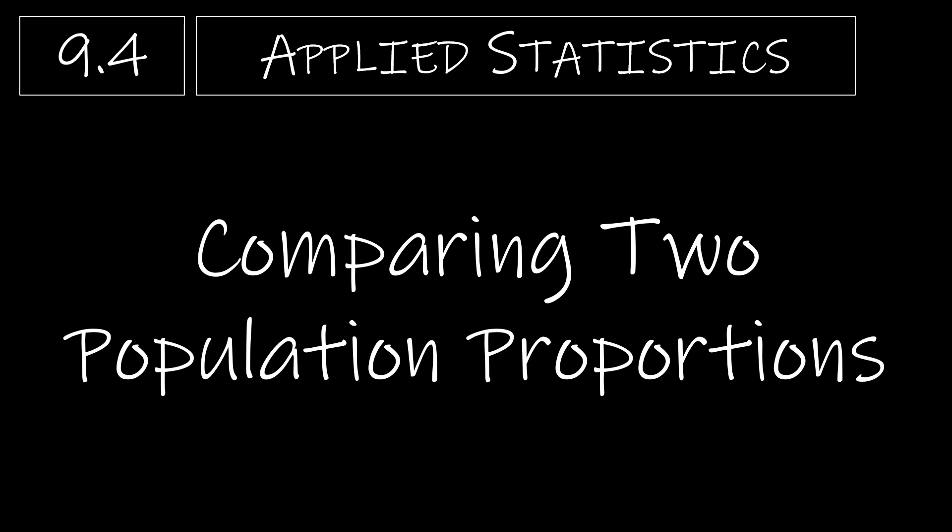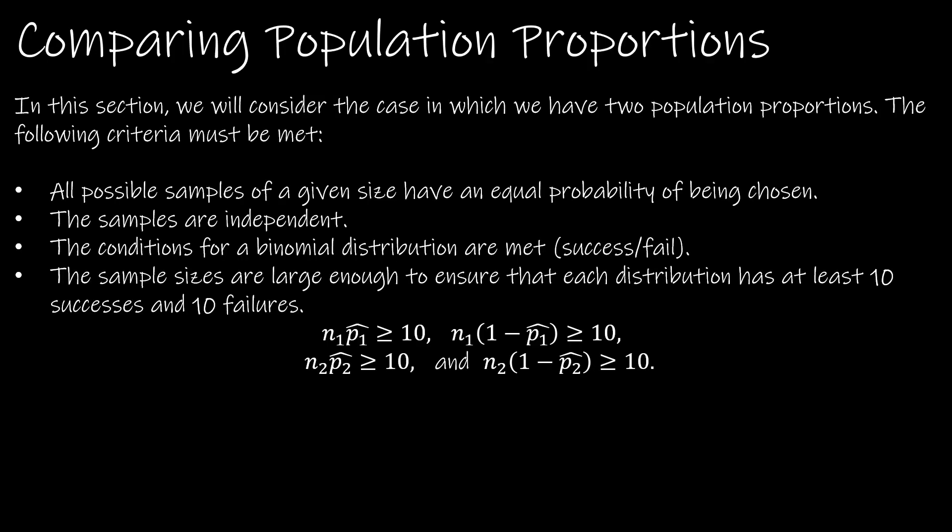In this section, we are going to look at comparing two population proportions. I do want to point out that there are more than four sections in Chapter 9, just as there were in Chapter 8, but we are not going to look at comparing standard deviations and variances. In this section, we're going to look at two population proportions.